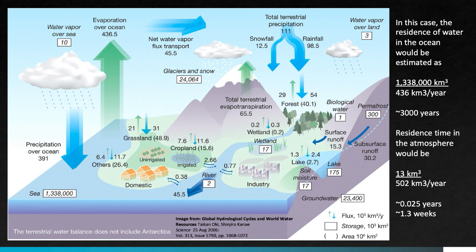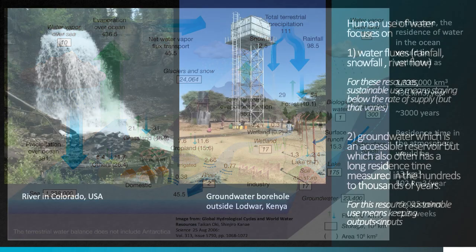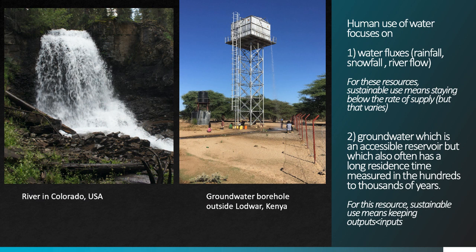Later, when we talk about climate change impacts on drought and rainfall, these processes become central to the changes we're seeing in the global hydrologic cycle. From a human perspective, the key takeaway is that we depend on critical water fluxes — including rainfall, snowfall, and on land, river flow — to provide water for human cities and agriculture. For these fluxes, sustainable water use means keeping our demand below the rate of supply, or the flux rate. That rate of supply does vary year to year and from place to place.